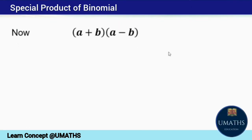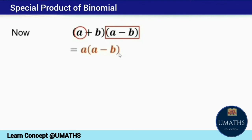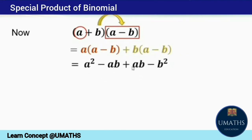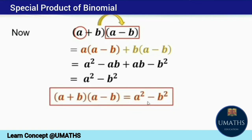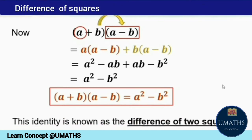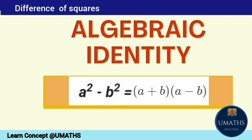The third identity is based on the product of the sum and difference of a and b. Expanding by the distributive law: a times a minus b, plus b times a minus b, gives a squared minus ab plus ab minus b squared. The middle terms are equal in magnitude but opposite in sign, so they cancel each other, leaving only the square terms. This identity is also known as the difference of two squares: a squared minus b squared equals a plus b times a minus b.